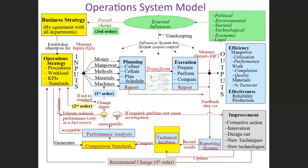The fourth type is fourth order change, which is triggered by the system itself in an attempt to be proactive. This is the only proactive form of change, and it forms part of what you'll be learning later when we study continuous improvement in operations. It's triggered by the system in anticipation of a change from the environment.